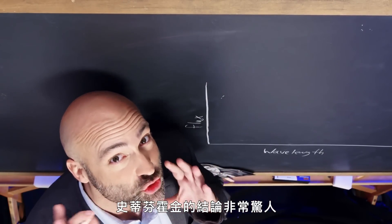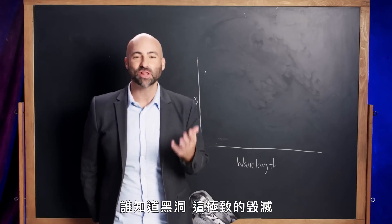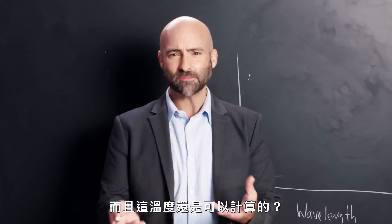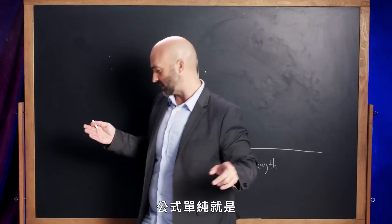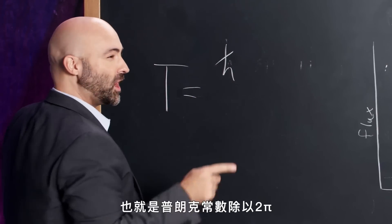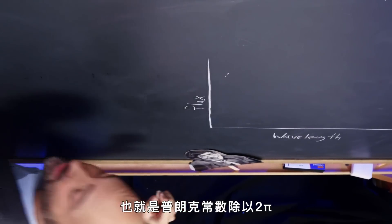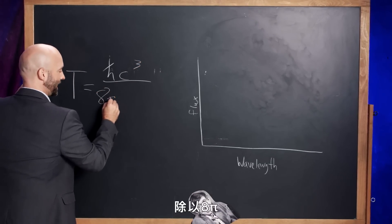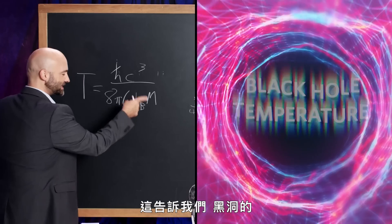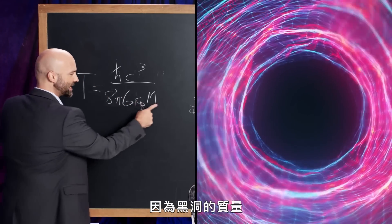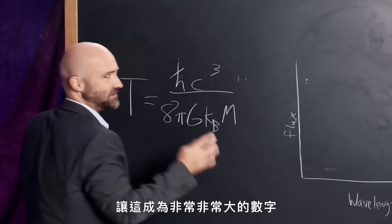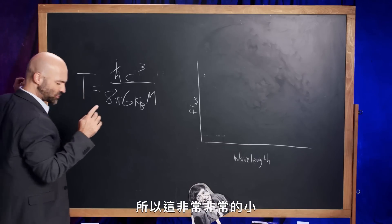Stephen Hawking's result was extraordinary and honestly counterintuitive. Who knew that black holes, the ultimate bottomless pits of destruction, would glow — would have a temperature? And this is something we can calculate. Hawking's formula for the temperature of a black hole is: temperature equals the reduced Planck's constant — which is Planck's constant divided by two pi — times the speed of light cubed, divided by eight pi times Newton's gravitational constant times the Boltzmann constant times the mass of the black hole. This tells us that the temperature is incredibly small, because even the smallest black holes have a mass of a few times that of the sun, making this a very, very big number in the denominator, which makes temperature a very, very small number.